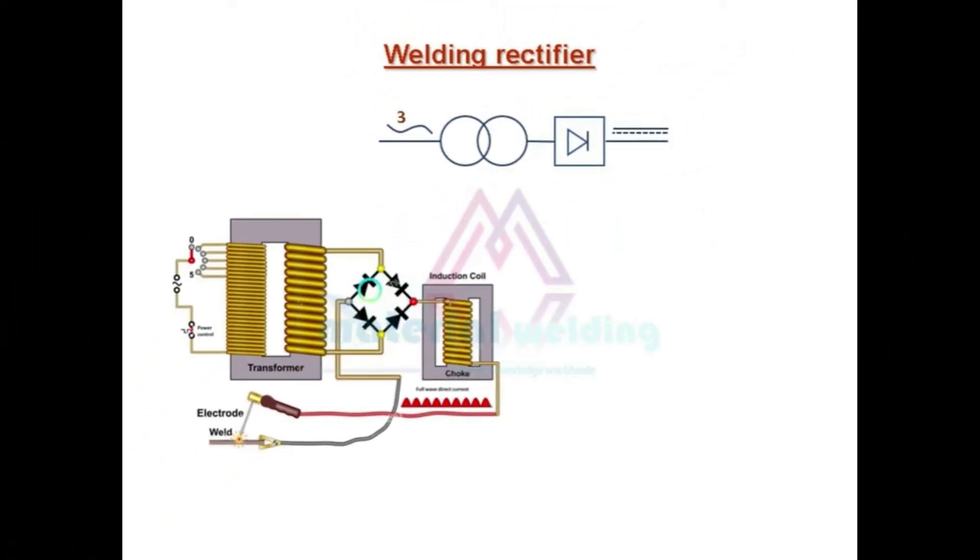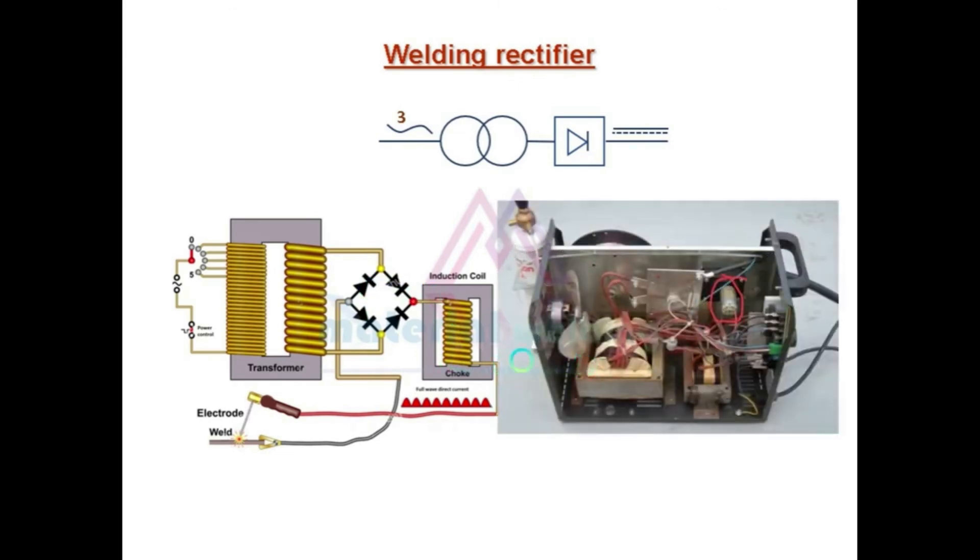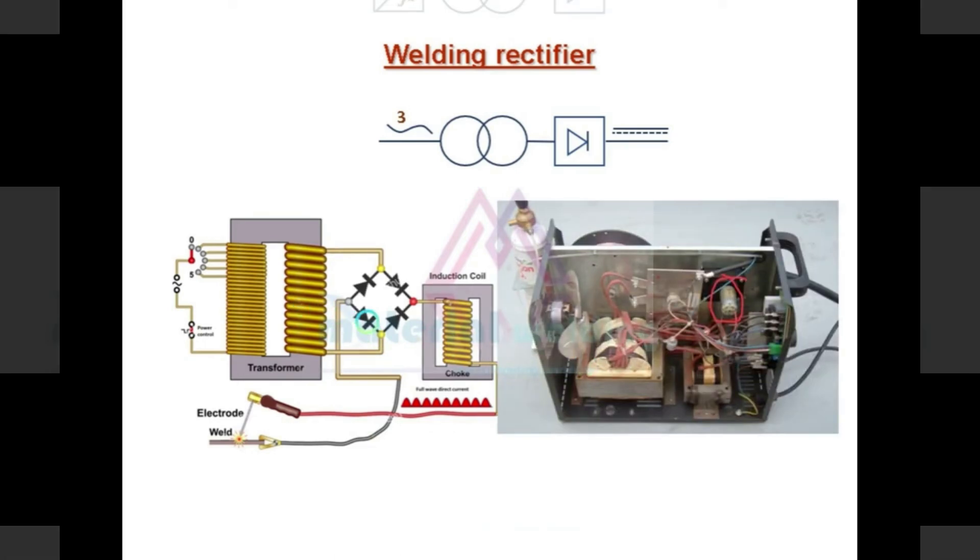So rectifier basically consists of a transformer, a DC rectifying device, either a diode or thyristor for converting output AC to DC. The rectifier is less heavy than transformer due to reduced size of transformer.